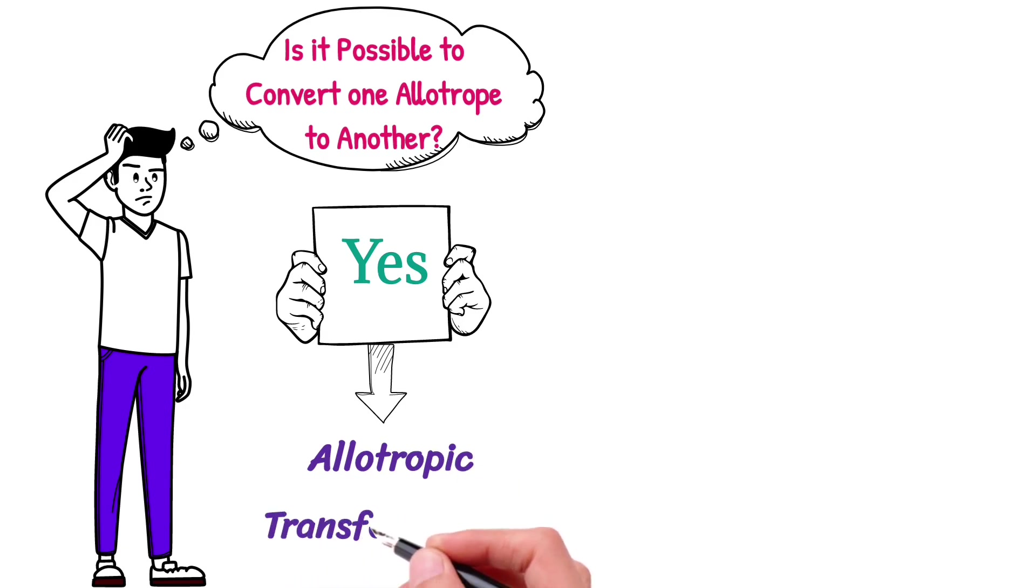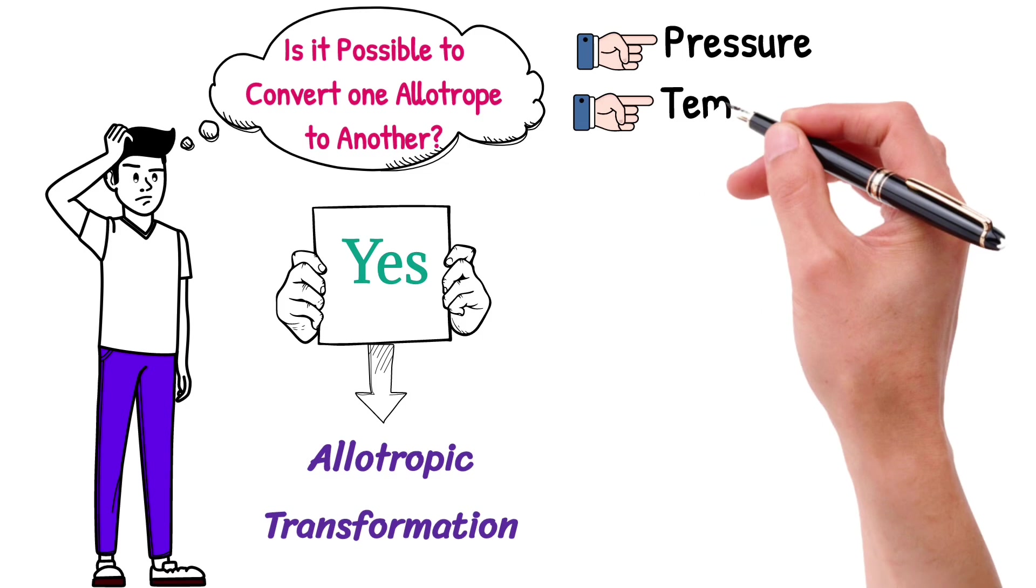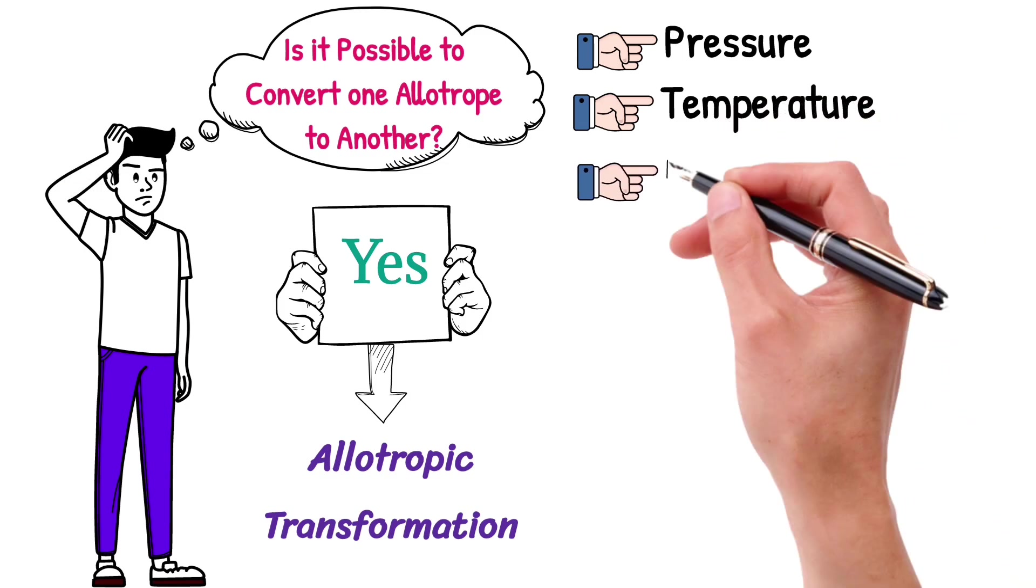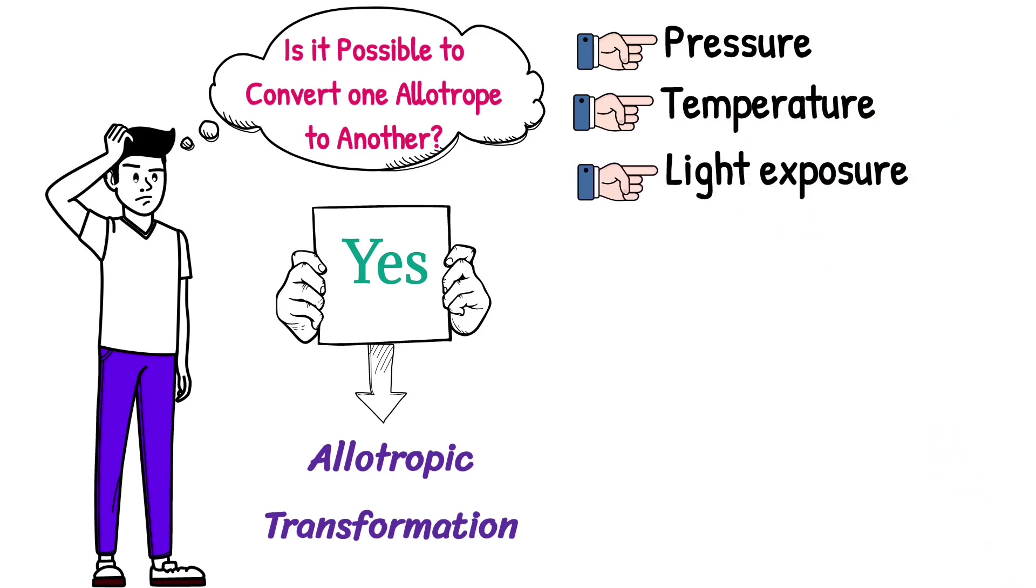This process is called allotropic transformation. Allotropes change into each other when the pressure, temperature, or light exposure of an element changes.